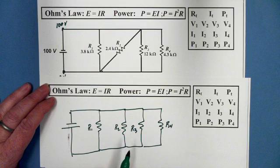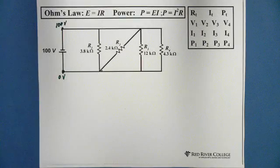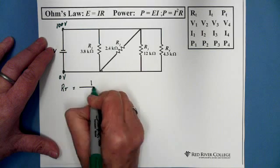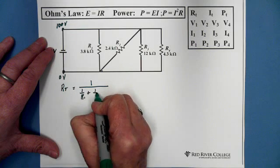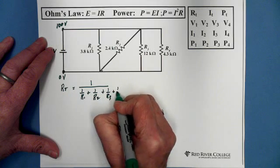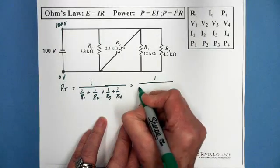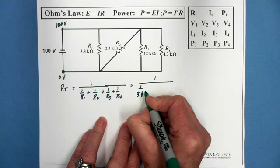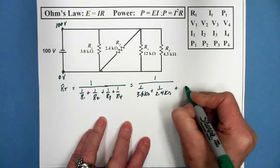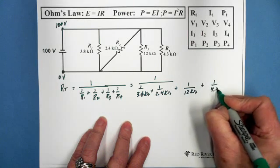And once you've redrawn it, you just solve for total resistance. So we'll solve total resistance first. Total resistance is 1 over 1 over R1 plus 1 over R2 plus 1 over R3 plus 1 over R4, which equals 1 over 1 over 3.8 kilo ohms plus 1 over 2.4 kilo ohms plus 1 over 12 kilo ohms plus 1 over 4.3 kilo ohms.